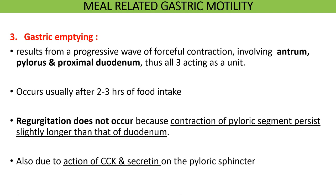The third type of meal-related gastric motility is gastric emptying, which means the movement of chyme from the stomach via the pyloric sphincter into the duodenum. It occurs due to a progressive wave of forceful contraction that causes the antrum, pylorus and proximal duodenum to act as a single unit. Gastric emptying usually occurs two to three hours after a meal when the chyme is fine enough to pass through the pyloric sphincter. Regurgitation or backflow is prevented by the strong contractions of the pyloric sphincter as well as by the release of gastrointestinal hormones like cholecystokinin and secretin.